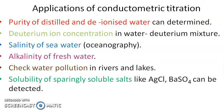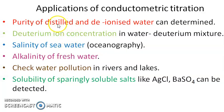The applications of conductometric titrations include: determining the purity of distilled and deionized water, determining deuterium concentration in water-deuterium mixtures, measuring salinity of sea water, determining alkalinity of fresh water, and assessing water pollution — including the extent and type of pollutants present. The solubility of sparingly soluble salts such as AgCl and BaSO₄ can also be determined, as was discussed in the previous session on conductance.